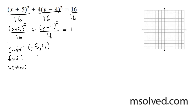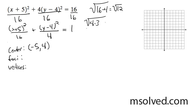For my foci, in this case it's going to be the longer side minus the shorter side — the square root of that. So for foci, it's going to be the square root of 16 minus 4, which is equal to the square root of 12, which is equal to 4 times 3. And you can pull out this 4, so you get 2 root 3.